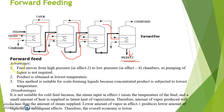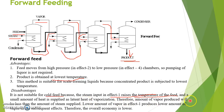Advantages of forward feeding: feed moves from high pressure to low pressure chamber, so pumping of liquor is not required. The product is obtained at the lowest temperature. This method is suitable for scale-forming liquids because the concentrated product is subjected to the lowest temperature. Disadvantages: it is not suitable for cold feed, because the steam input in effect 1 raises the temperature of the feed, and only a small amount of heat is supplied as the latent heat of vaporization. Therefore the amount of vapor produced will be less than the amount of steam supplied, and the overall economy is lower.